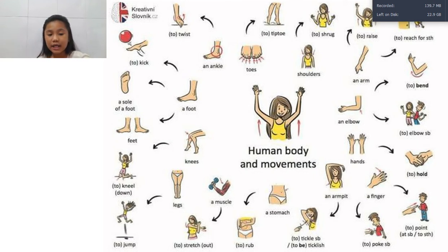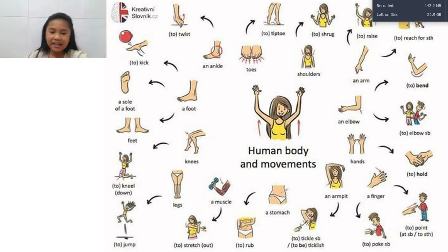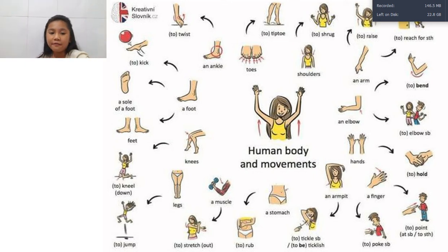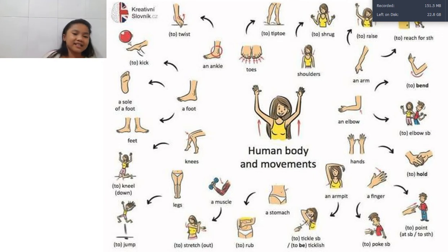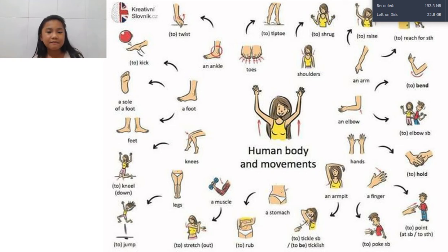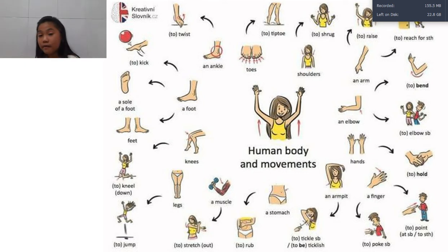Next, legs — you use them to jump and to run. There's a lot of things to do with legs. Next, knees — you can kneel down like you're begging somebody. We also have feet. Feet is the plural form of foot. Next, we have the sole of the foot — it's the bottom part of our foot. Next, we have the ankle — it is the part that connects from the legs to our feet.